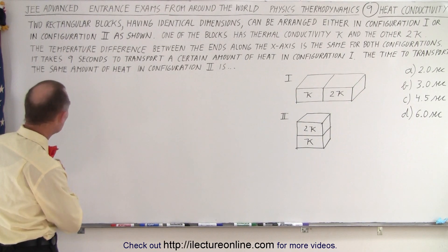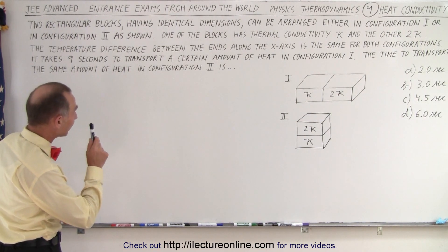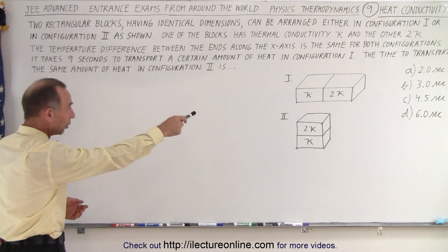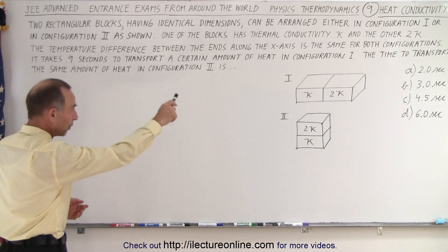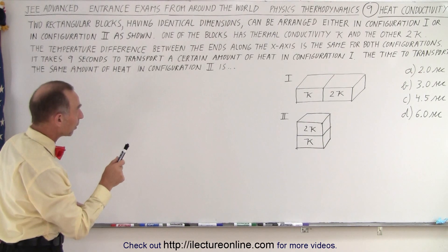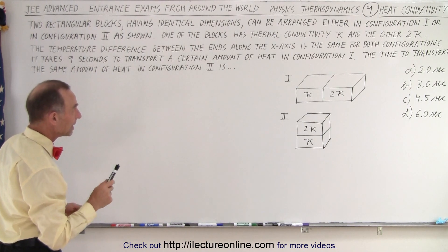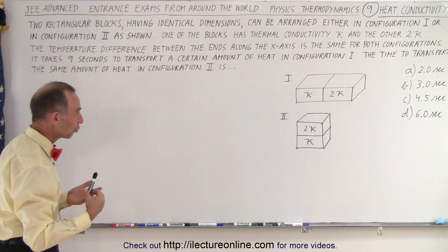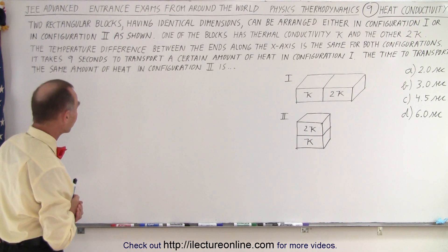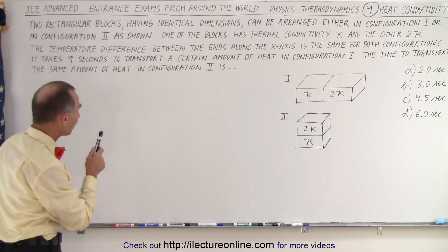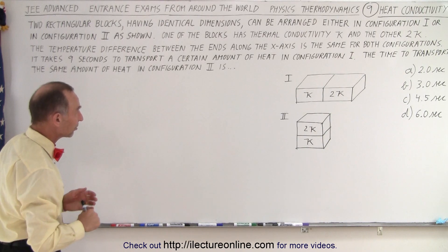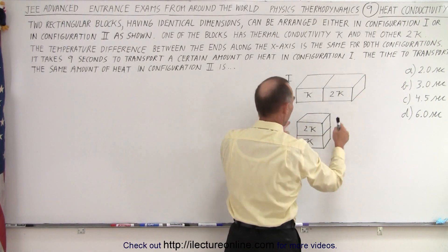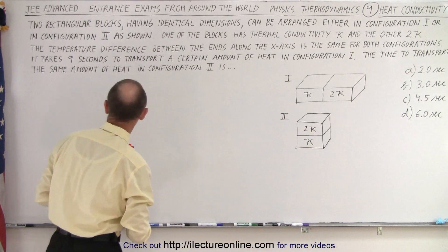It says: two rectangular blocks having identical dimensions can be arranged either in configuration 1 or in configuration 2. One of the blocks has thermal conductivity K and the other one 2K — so the other one is twice the thermal conductivity of the first one. The temperature difference between the ends along the x-axis is the same for both configurations, meaning high and low temperature is the same on both sides.